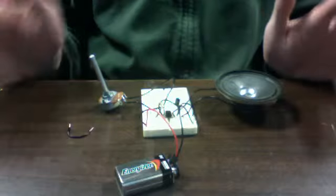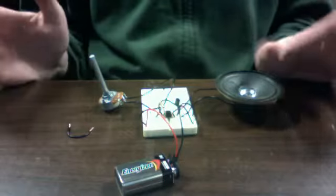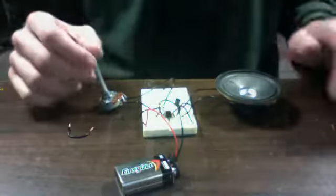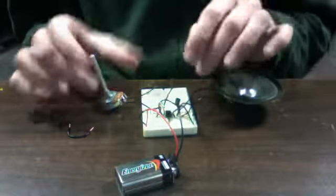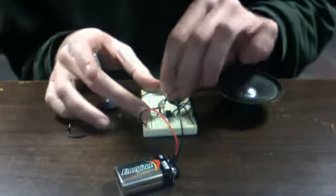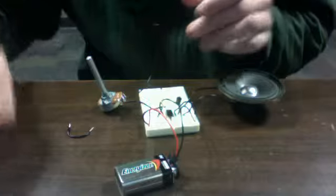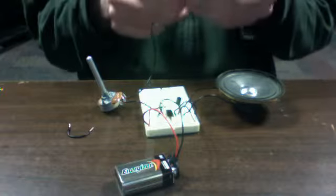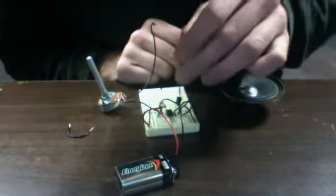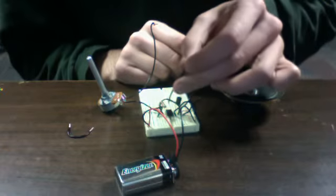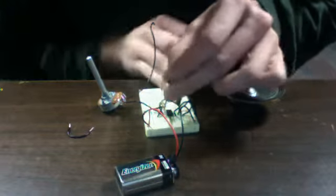The second part is making the human theremin. And all we have to do for this one is unplug one of the sides of the variable resistor and just plug in another black wire to where the other side of the variable resistor was. So, here we go.